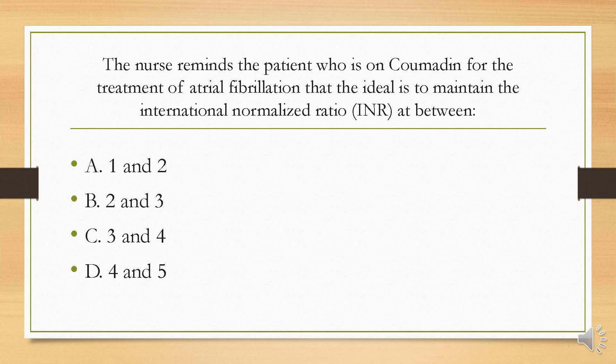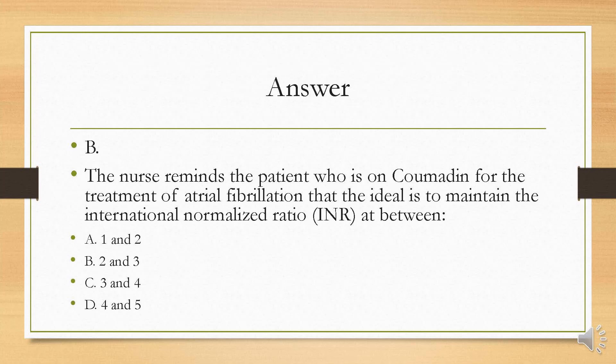The nurse reminds the patient on Coumadin for atrial fibrillation that the ideal is to maintain the international normalized ratio, or INR, at between: A, 1 and 2; B, 2 and 3; C, 3 and 4; or D, 4 and 5? The correct answer is B. The desired INR for monitoring anticoagulant therapy is between 2 and 3. Remember that the INR is partnered with PT — it's a measurement of the time it takes for your blood to clot.